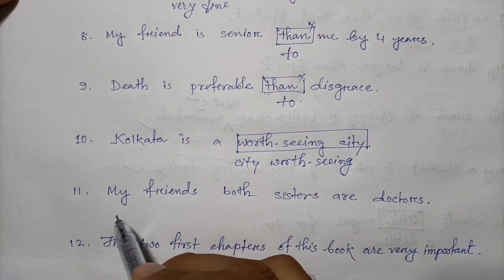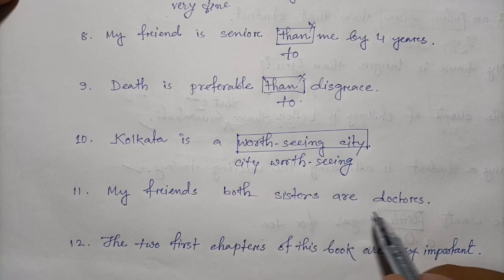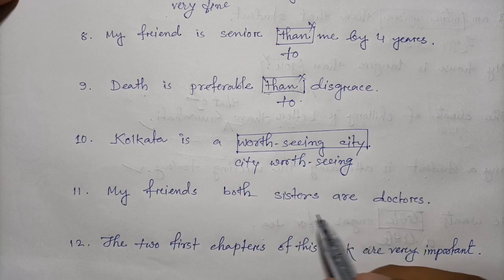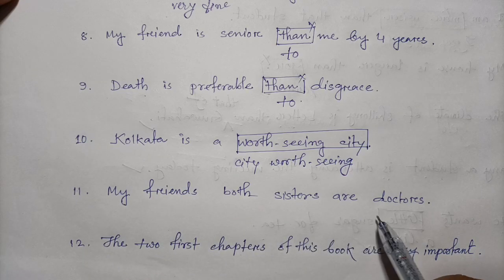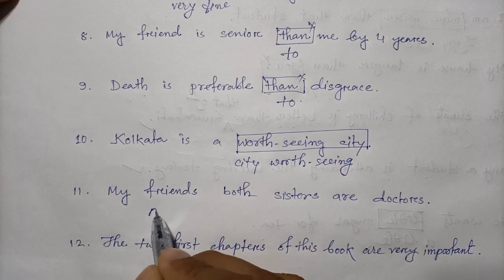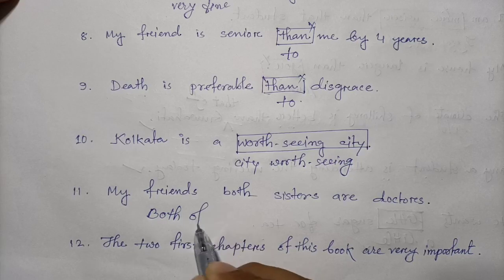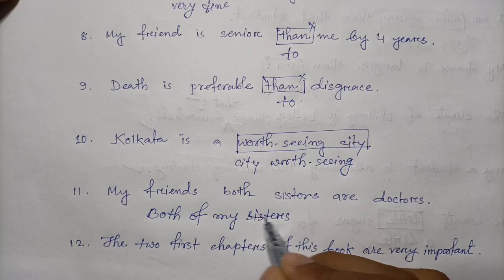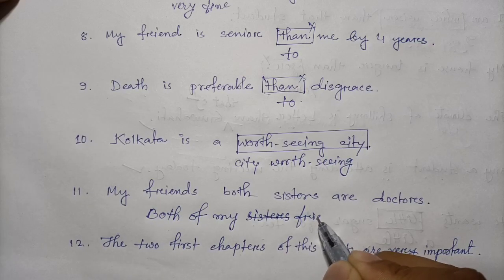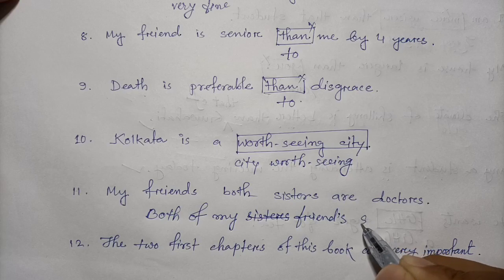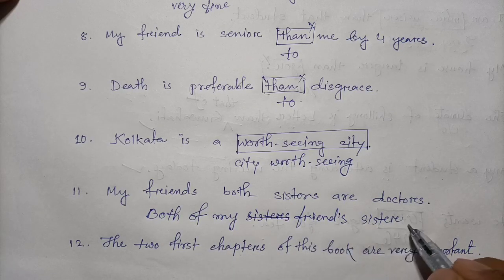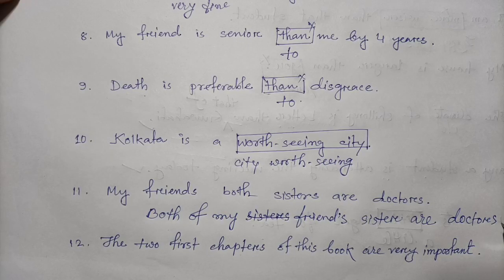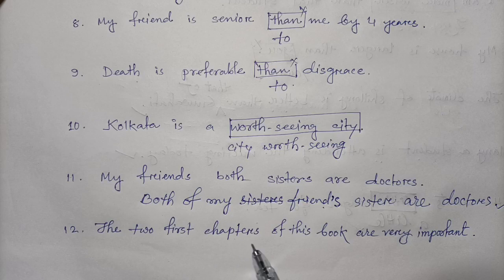Question eleven: 'My friend's both sisters are doctor.' This is wrong. The correct sentence is: 'Both of my friend's sisters are doctors.' This is the right sentence.